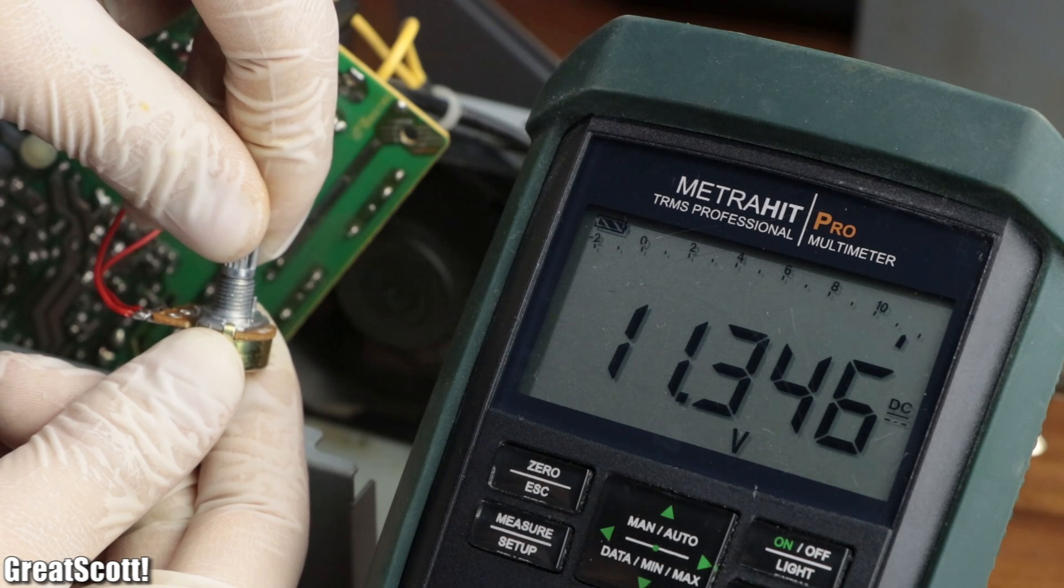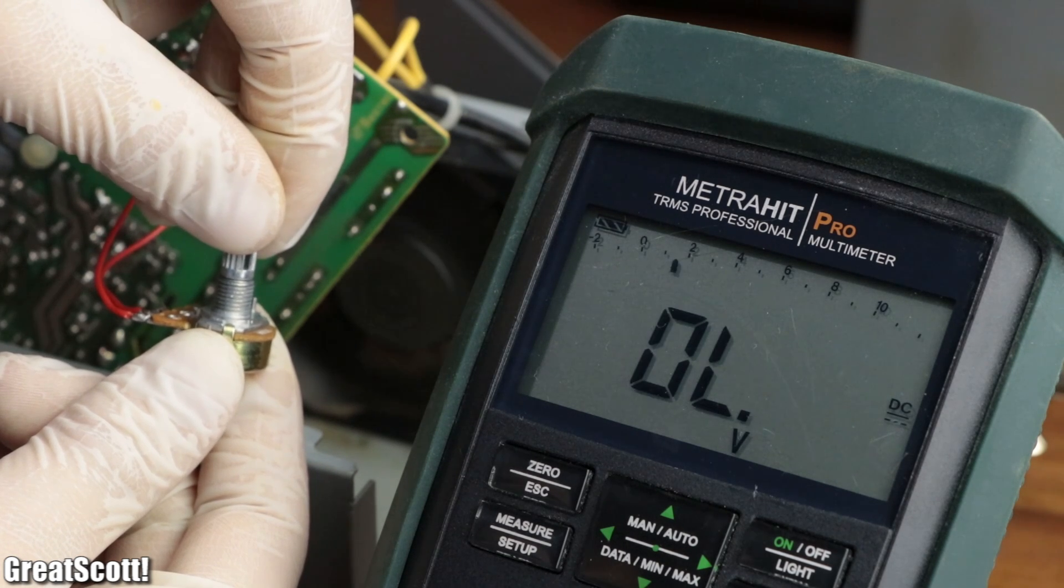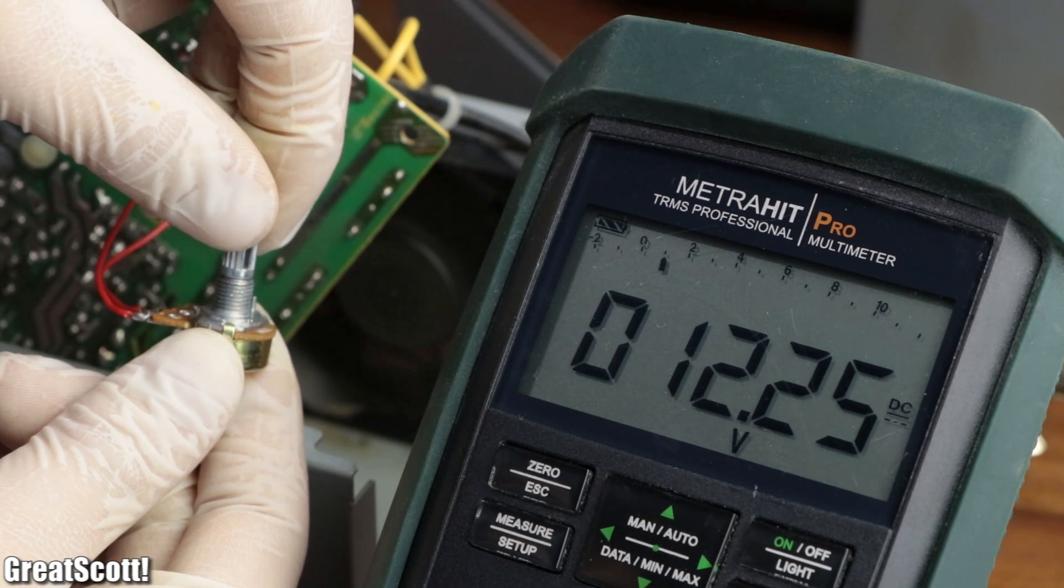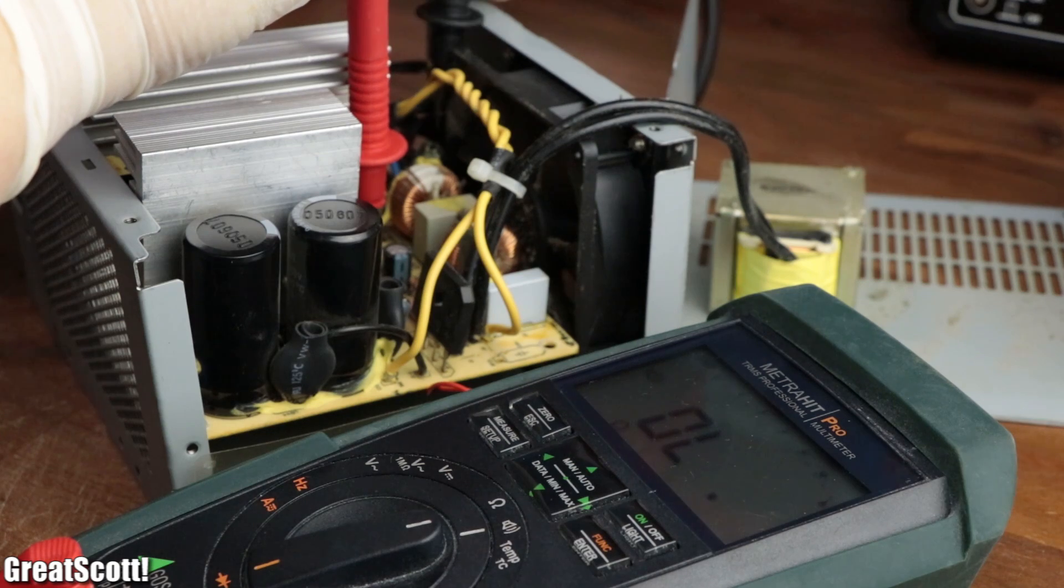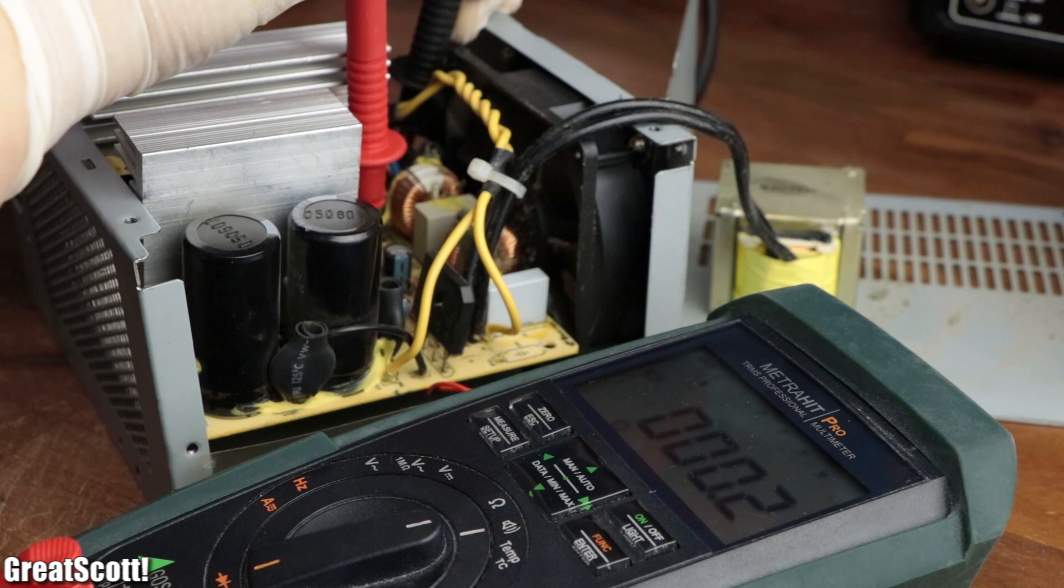And by slowly varying the potentiometer value, the output voltage did change accordingly, but only upwards, and only to a certain degree, since the over voltage protection of the supply was still active.